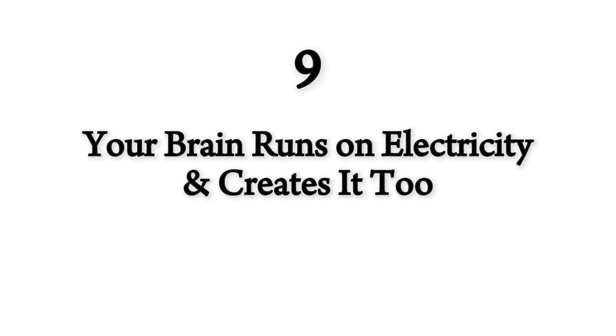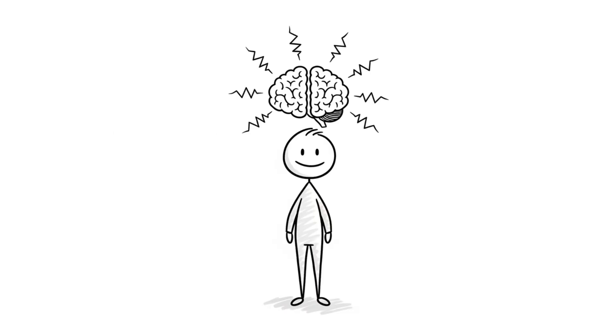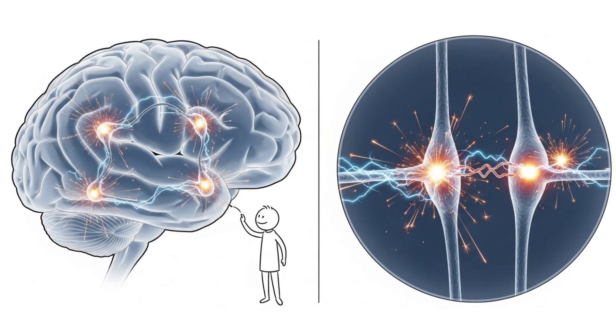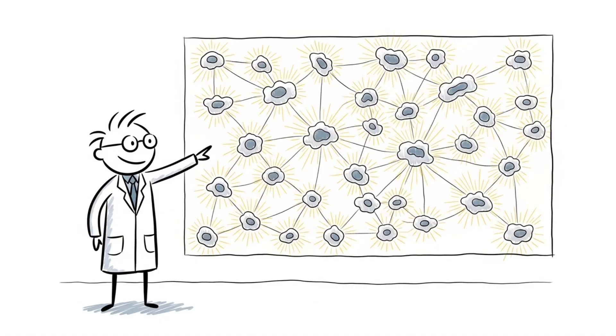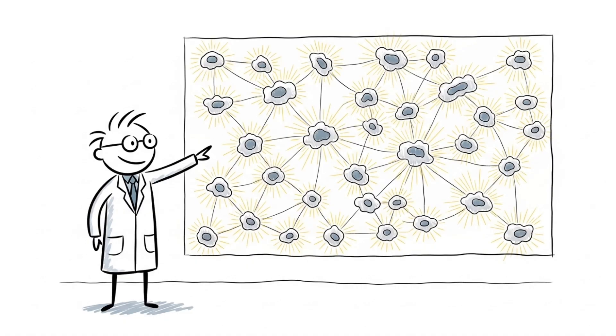Number 9. Your brain runs on electricity and creates it too. Your brain is humming with electric power right now. Neurons fire, synapses spark, and billions of cells are creating electromagnetic pulses simultaneously. This is biological electricity in action.